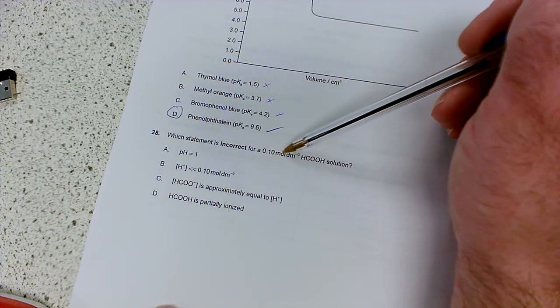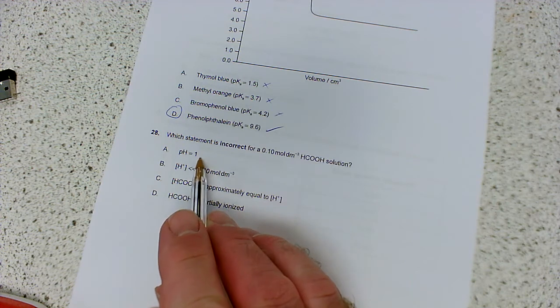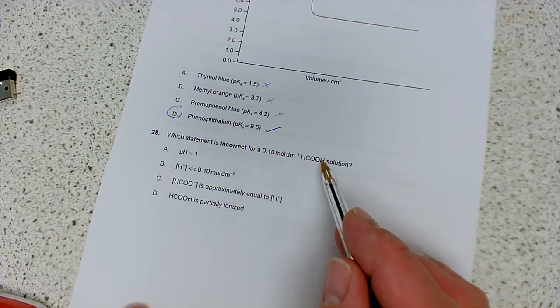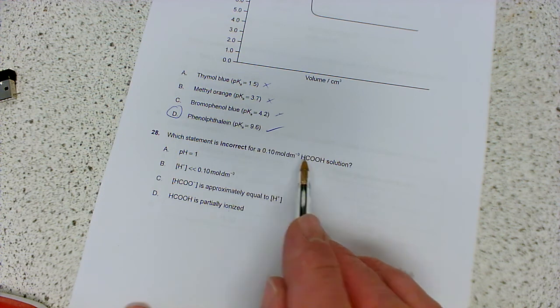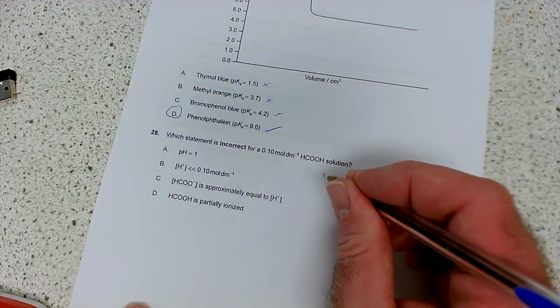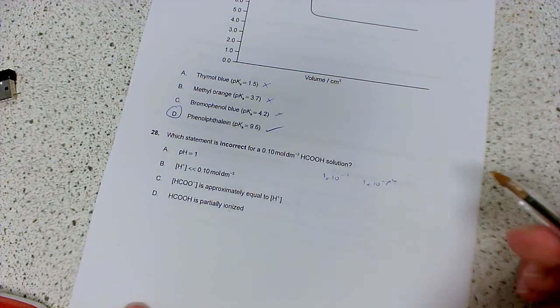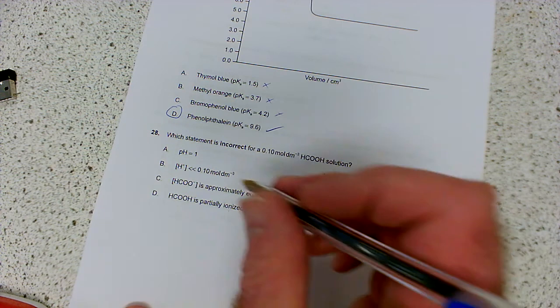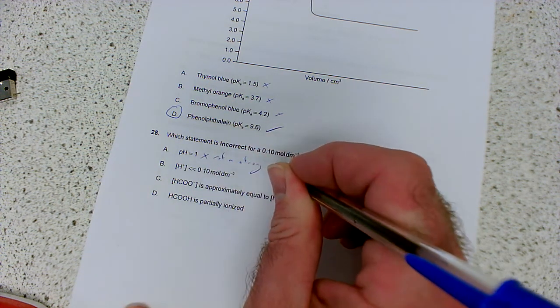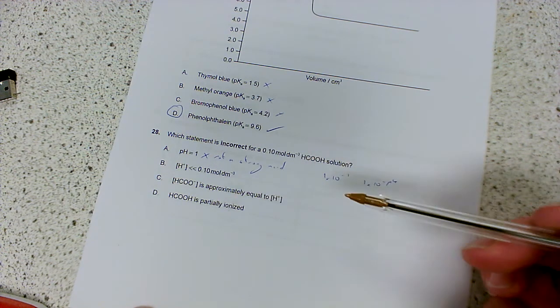Which statement is incorrect for a 0.1 mol per decimeter cubed methanoic acid solution? The pH equals 1. Well, if it was a strong acid, yes. So if it was HCl, then basically a strong acid is fully ionized. And then you'd have 0.1 mol per decimeter cubed of hydrogen ions, which you'd write as 1 times 10 to the minus 1. And of course, that's another way of saying that's 1 times 10 to the minus pH. So the pH would be 1. But that's not correct here because it's not a strong acid.